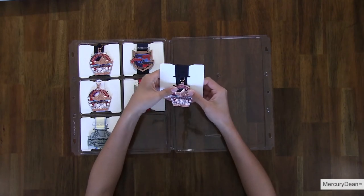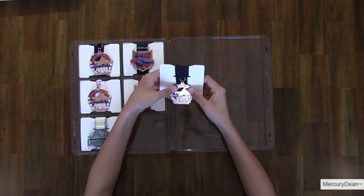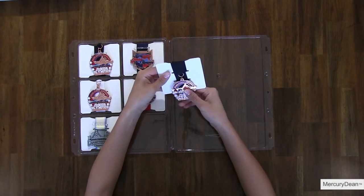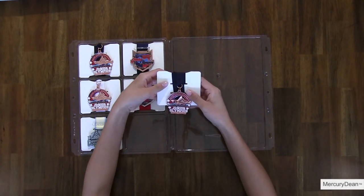Medals come in many shapes, different sizes, thicknesses, and weights. The neck ribbons come in different materials, lengths, and widths. This is why we made the insert cavity system adjustable.